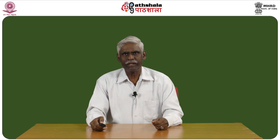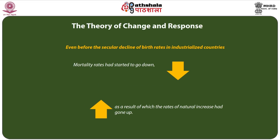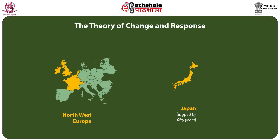In 1963, Kingsley Davis, a famous sociologist and demographer, proposed a theory to explain the declines in birth rates in developed countries. It was known that even before the secular decline of birth rates in industrial countries, mortality rates had started to go down, as a result of which the rates of natural increase had gone up. This happened in North West Europe as well as in Japan, though the latter lagged by 50 years.